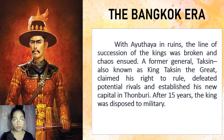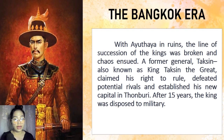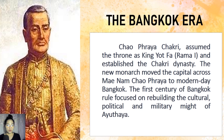With Ayutthaya in ruins, the line of succession was broken and chaos ensued. A former general, Taksin, also known as King Taksin the Great, claimed his right to rule, defeated potential rivals, and established his new capital in Thonburi, a settlement downriver from Ayutthaya with better access to trade. After 15 years, the king was deposed by the military. Eventually, Chao Phraya Chakri assumed the throne as King Yotfa, also known as Rama I, and established the Chakri dynasty, which still rules today.